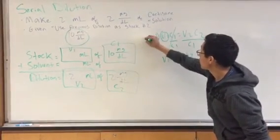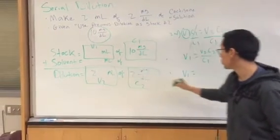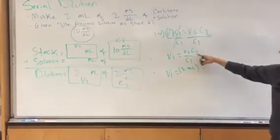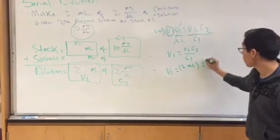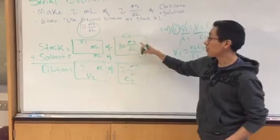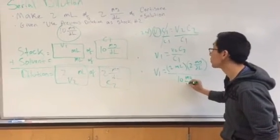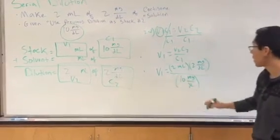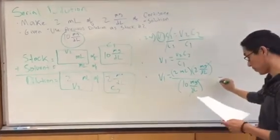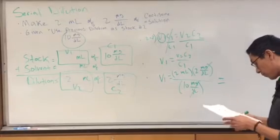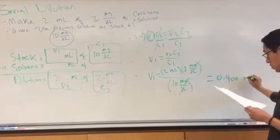This is the second step from the organizing. Now, the V1 equals, what is our V2? V2 will be 2 milliliters, times our C2, which is 2 milligrams over 1 deciliter. And then, C1. So this is, it helps, again, organizing. C1 is right there. You can always refer back to it, if you have questions or concerns about it. Now the milligrams and deciliters will cancel out. Now we have our V1 will equal to 0.400 milliliters.